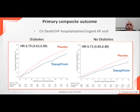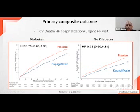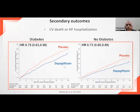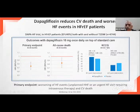The primary composite outcome was CV death, heart failure hospitalization, or urgent heart failure visit. Even an emergency room visit for heart failure was considered an endpoint, capturing patients who may not be admitted for social or economic reasons. This endpoint showed a highly significant decrease with dapagliflozin, both in diabetic and non-diabetic patients. CV death, hospitalization, and all-cause death were all statistically significantly decreased. Not only was quantity of life improved, but quality of life as measured by the Kansas City Cardiomyopathy Questionnaire also showed statistically significant improvement.